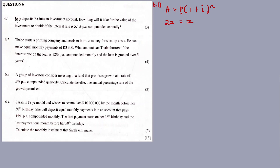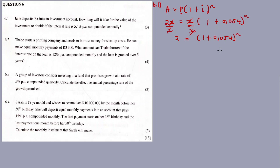Let's read again — it's the amount you deposit, x rands, into an investment account. How long will it take for the value of the investment to double? That's why we multiply x by 2. Then the interest rate — open bracket 1 plus 0.054, raised to exponent n. Divide both sides by x, cancel, cancel, cancel. What remains is 2 = (1 + 0.054) raised to exponent n.